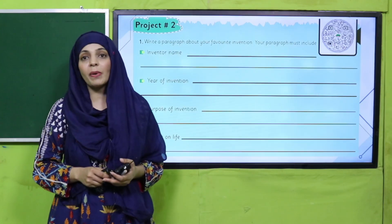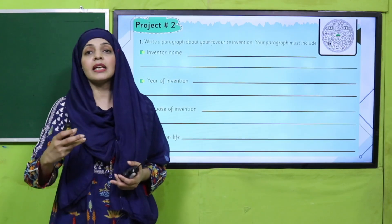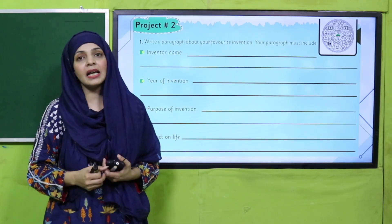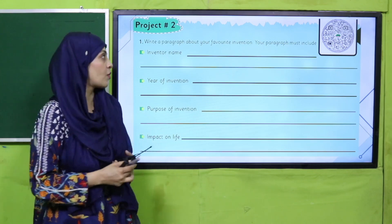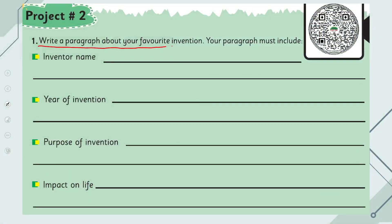My dear students, this is Project Number 2. Let's look at the instructions: write a paragraph about your favorite invention. Your paragraph must include the inventor's name, year of invention, purpose of invention, and impact on life.